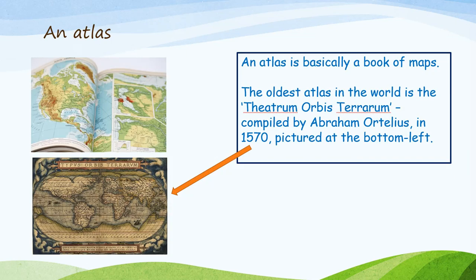The next tool is an atlas, which is basically a book of maps. The oldest atlas in the world is the Theatrum Orbis Terrarum, compiled by Abraham Ortelius in 1570, and this is pictured at the bottom left.